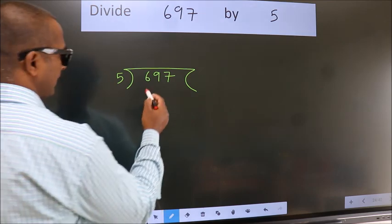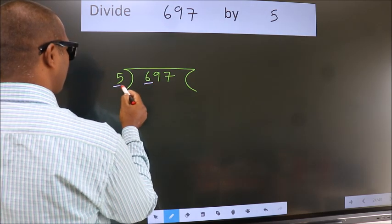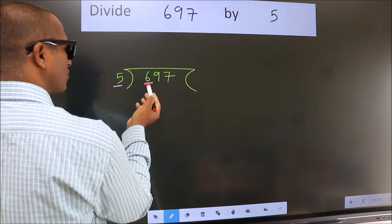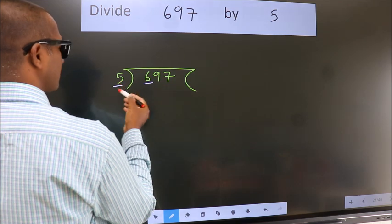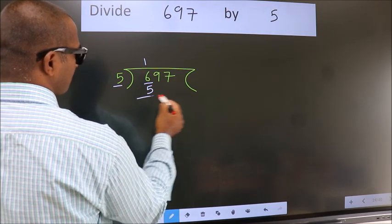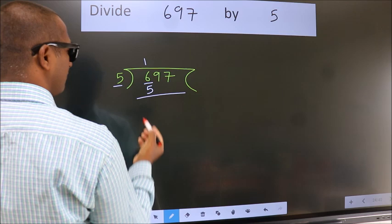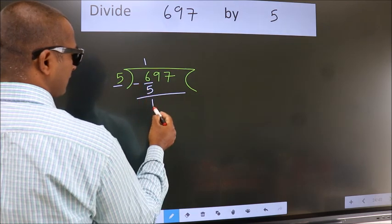Next. Here we have 6, here 5. A number close to 6 in the 5 table is 5 once, which is 5. Now we should subtract. We get 1.